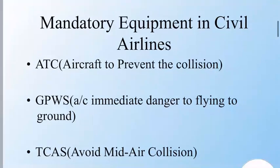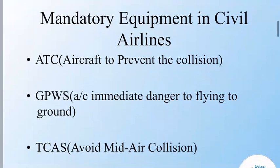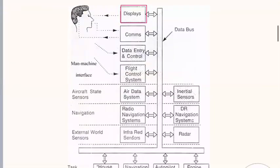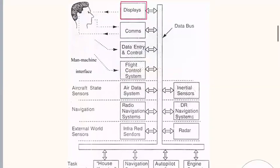So what are the mandatory equipments in civil airlines? The first is ATC, which is used to prevent collision. Next is GPWS, which warns of immediate danger of flying into the ground. The next is TCAS, which is used to avoid mid-air collision. These are the avionics components being used in the aircraft.